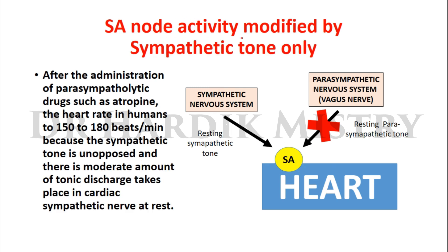When SA node activity is modified by sympathetic tone only — after the administration of parasympatholytic drugs such as atropine, which block or oppose the action of the parasympathetic nervous system — the heart rate in humans becomes 150 to 180 beats per minute, because sympathetic nervous system activity becomes dominant.